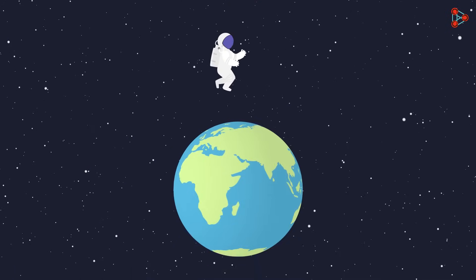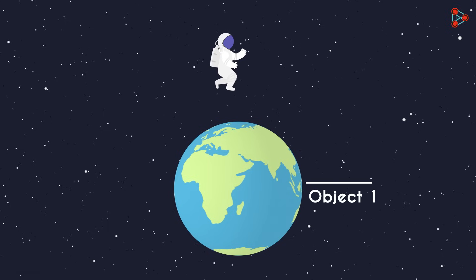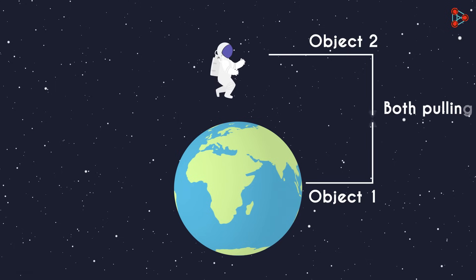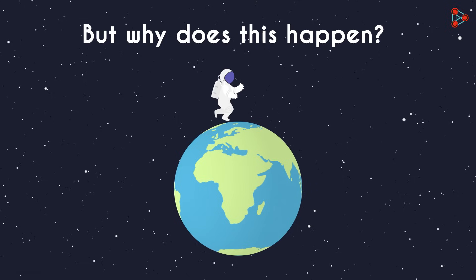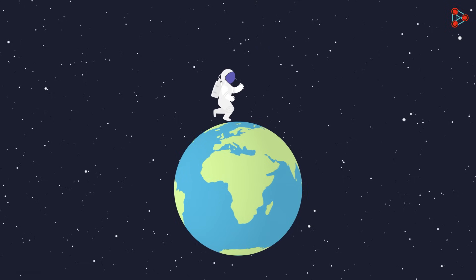In the case of earth and a human being, the earth is one object and the human being is another. Both are pulling the other towards themselves. But why does this happen? If you do a lot of research on what gravity really means, you may find out that gravity is not actually a force and it's just an illusion.